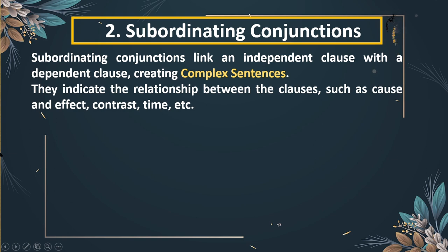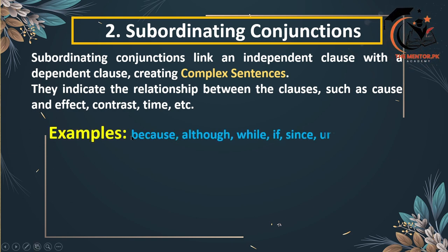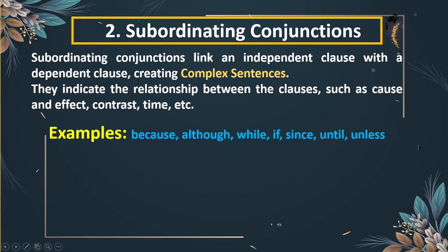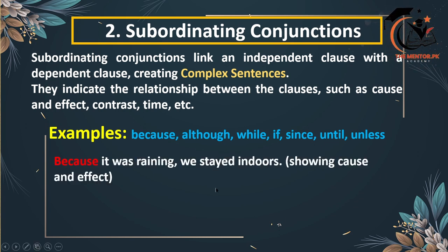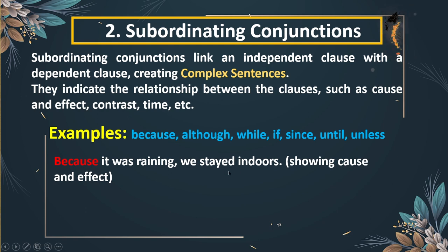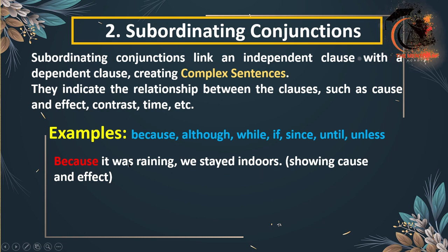The most common subordinating conjunctions are: because, although, while, if, since, until, and unless. For example: 'Because it was raining, we stayed indoors.' Here, this shows cause and effect — raining is the cause and staying indoors is the effect, shown through this subordinating conjunction.